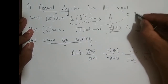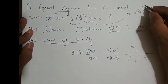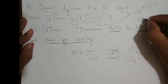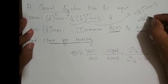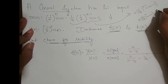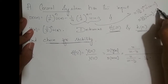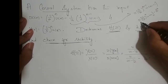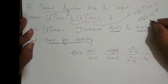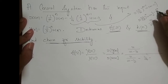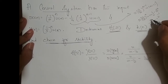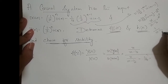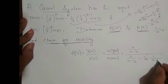We use the time-shift property to solve for the Z-transform of (1/2)^(n-1) u(n-1). This equals the Z-transform of the unshifted sequence (1/2)^n u(n) multiplied by z^(-1), because of the n minus 1 time-shift property. The Z-transform of (1/2)^n u(n) is z/(z - 1/2), so multiplied by z^(-1) the z's cancel, yielding 1/(z - 1/2).